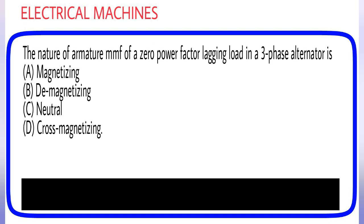The nature of armature MMF of a zero power factor lagging load in a three phase alternator is: (A) Magnetizing, (B) Demagnetizing, (C) Neutral, (D) Cross magnetizing. Answer is option B.